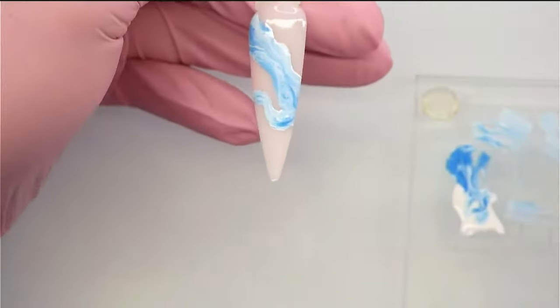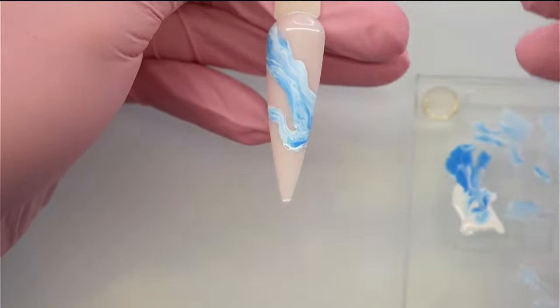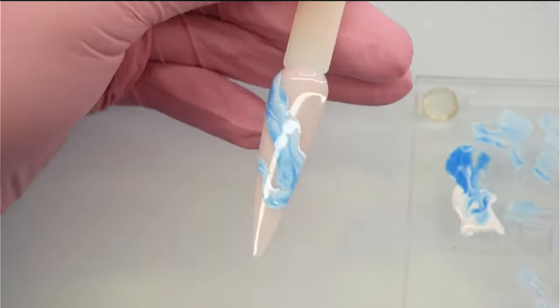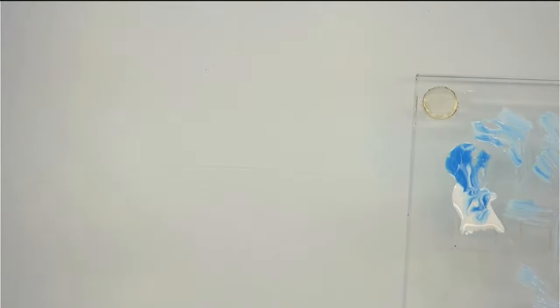I'm pretty much done with that. I'm going to remove any excess color that I have on my brush and cure this. You want to make sure that it is pretty thin, you don't want to have it too thick. If it's too thick then the light won't cure it, so be sure to thin it down as you're creating that design.